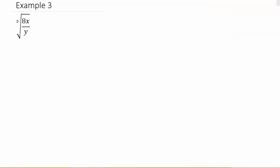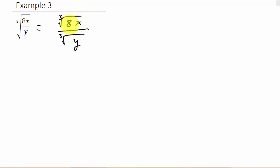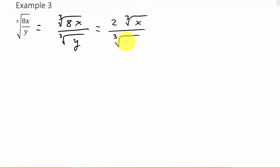Alright, here we have a cube root. First thing I'm going to split the radical up, giving me the cube root of 8x over the cube root of y. x to the first is not a perfect cube, but 8 is a perfect cube. So I'll simplify the numerator: the cube root of 8 is 2 and the x stays underneath, giving me 2 times the cube root of x over the cube root of y. Now we're ready to rationalize the denominator.